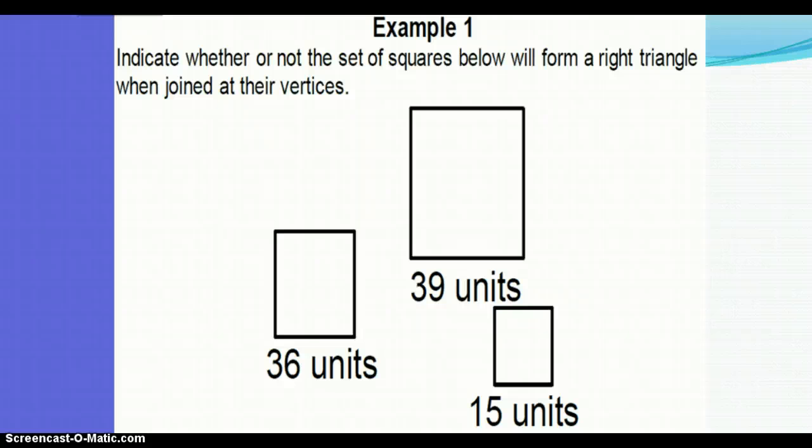The first example gives us three squares, but they're unit squares and they say one's 39, one's 36, and one is 15. You know what we need to do. We need to set up our A² + B² = C². And we look at labeling. So I want to label this A, label this B, and label this C.